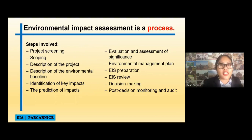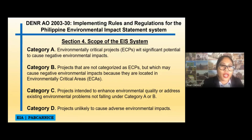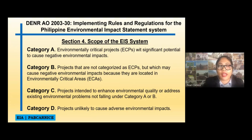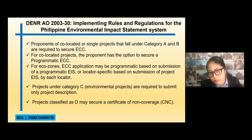In our DAO 30-2003, the implementing rules and regulations for the Philippine Environmental Impact Statement System, under Section 4, we have Category A, B, C, and D. Category A is ECP — environmental critical projects. Category B means ECAs, or environmental critical areas. Category C is projects intended to enhance environmental quality or address existing environmental problems not falling under Category A and B. And Category D is projects unlikely to cause adverse environmental impacts.